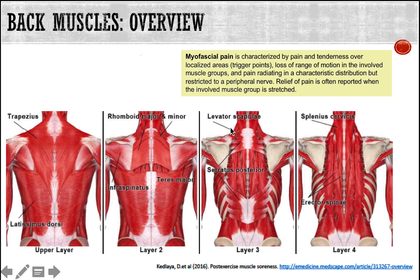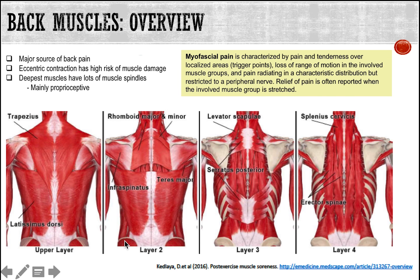Myofascial or muscle pain is characterized by pain and tenderness over trigger points. In addition, you will find a loss of range of motion in the involved muscle groups, and pain radiating in a characteristic distribution, though usually restricted to a peripheral nerve. In the upper layer of the summary slide we can see large muscle groups such as the trapezius and the latissimus dorsi, which span a large portion of the back.